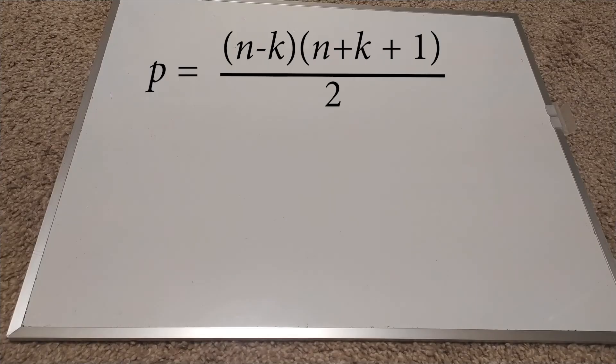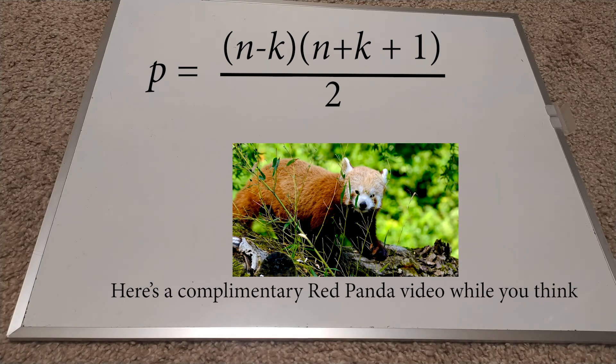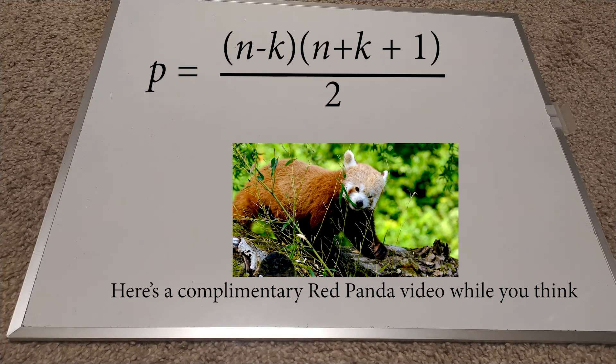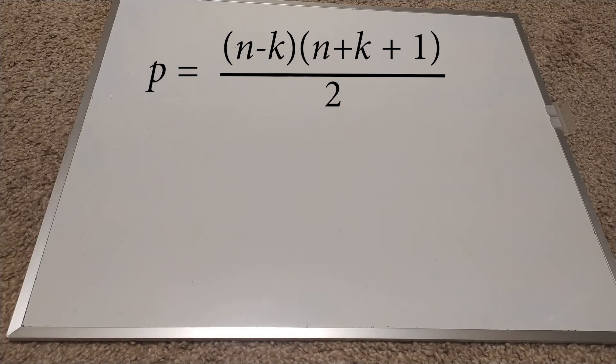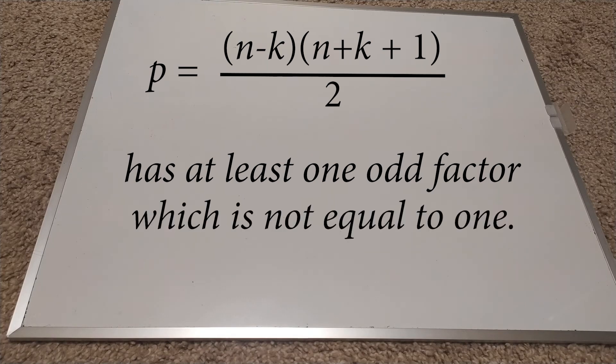So, what does this tell you about the product? I'll let you think for a while. Well, the number p must have at least one odd factor, and furthermore, this odd factor cannot be 1, which follows from our previous fact that I asked you to chew on.